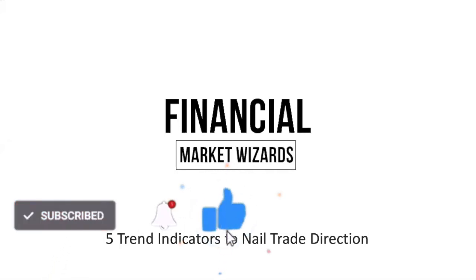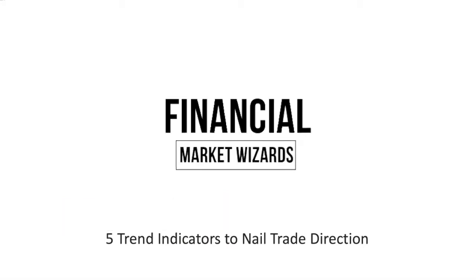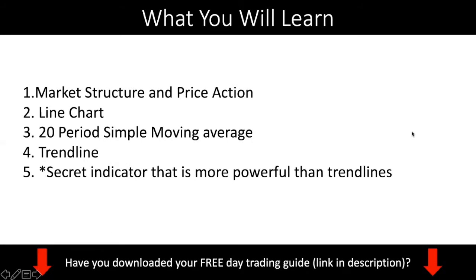These indicators work regardless of whether you are trading a currency pair, the commodities market, or even stocks. These are universal principles to help you nail the trade direction and make sure you're always on the right side of the trade. I'll be covering market structure and price action — the basics you must know. Then I'll show you a secret trick using a line chart to see it very clearly. I'll also show you how to use the 20-period moving average, a trend line, and lastly a secret indicator that is more powerful than trend lines — one that not only tells you the direction but also identifies very strong support and resistance levels. Make sure you stay to the end.